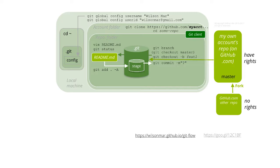The commit supplies a message describing changes, which applies to all files added. The git log command provides a history of commits. It has lots of options, so to avoid typing all the parameters desired, most people define an alias of the command in git's config file.